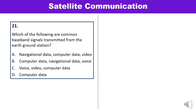Question 21: Which of the following are common baseband signals transmitted from an earth ground station? The three most common baseband signals are voice, video, and computer data. Answer C is correct.